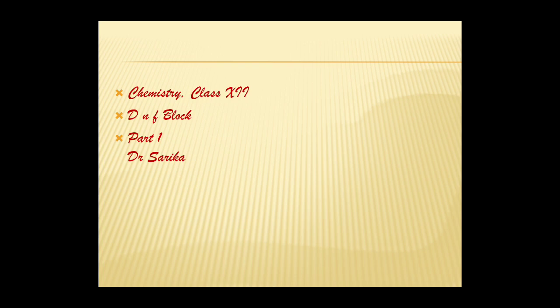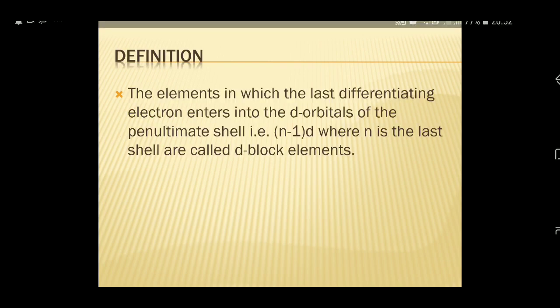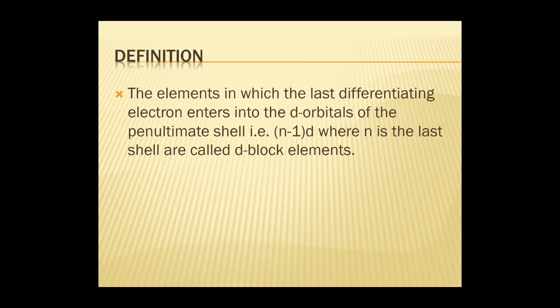The end members of the 3d, 4d, and 5d transition series — their chemistry is studied along with the chemistry of the transition metals. The presence of partly filled D or F orbitals in their atoms makes transition elements different from non-transition elements. Various precious metals such as silver, gold, and platinum, and importantly useful metals like iron, copper, and titanium belong to the transition metal series.